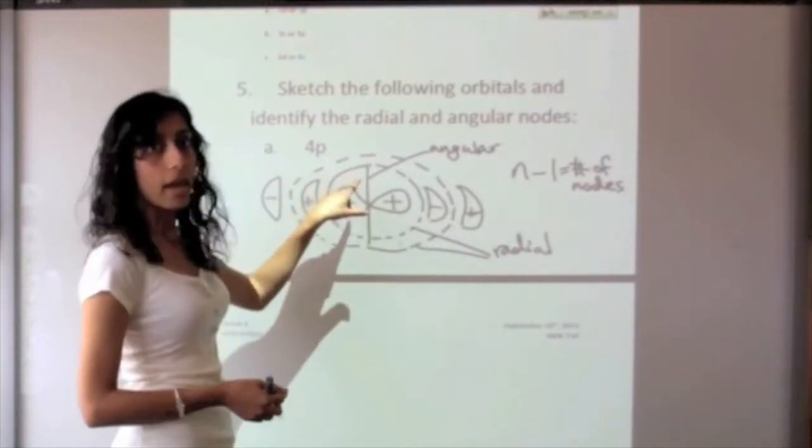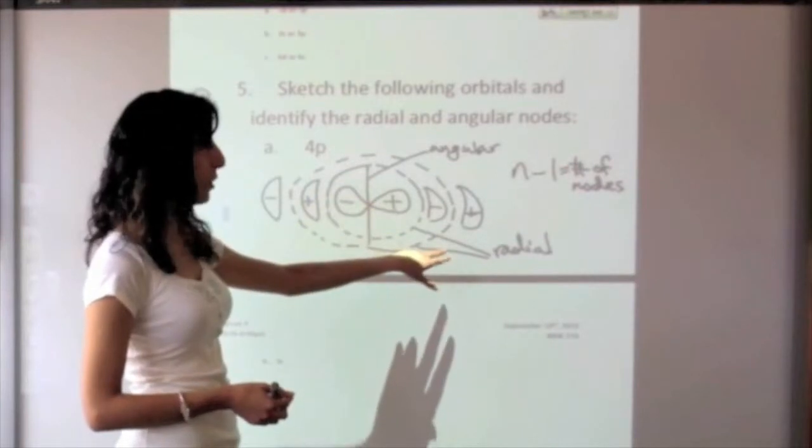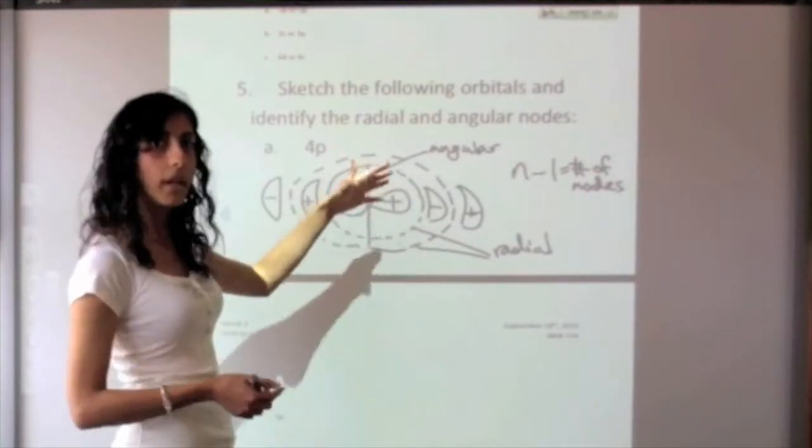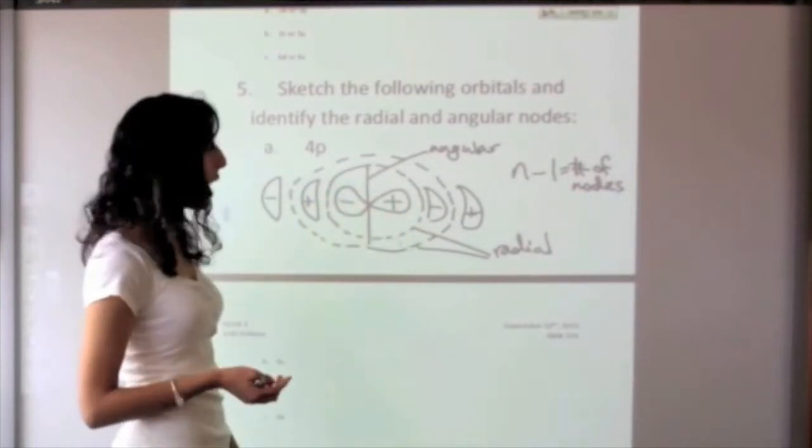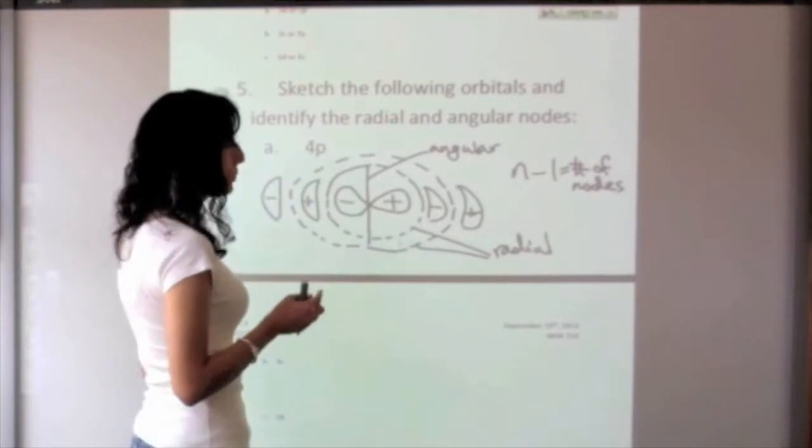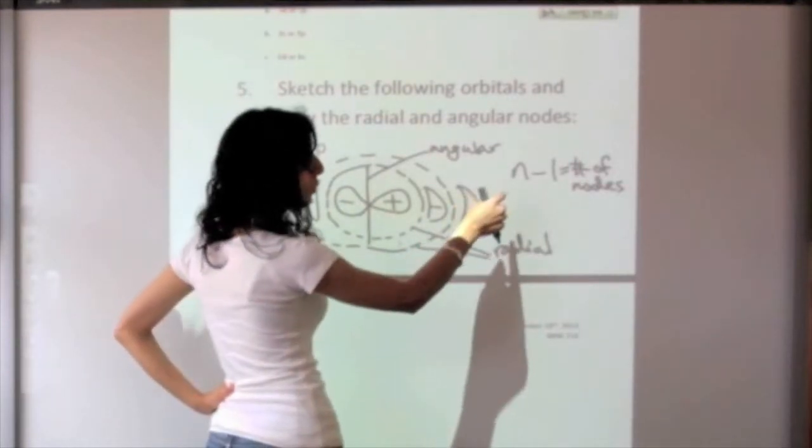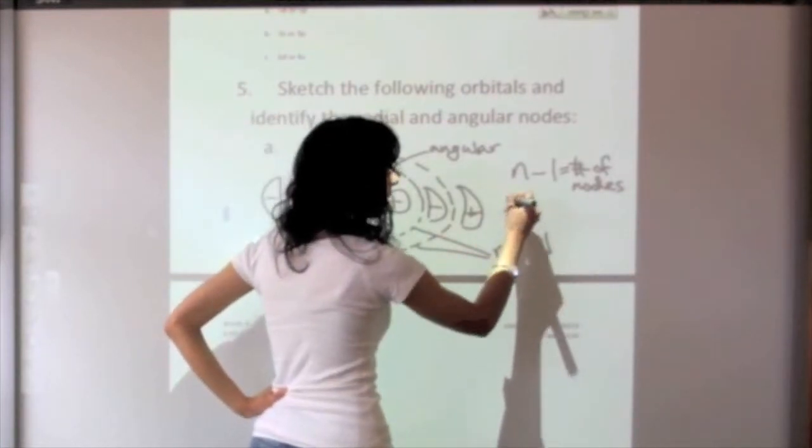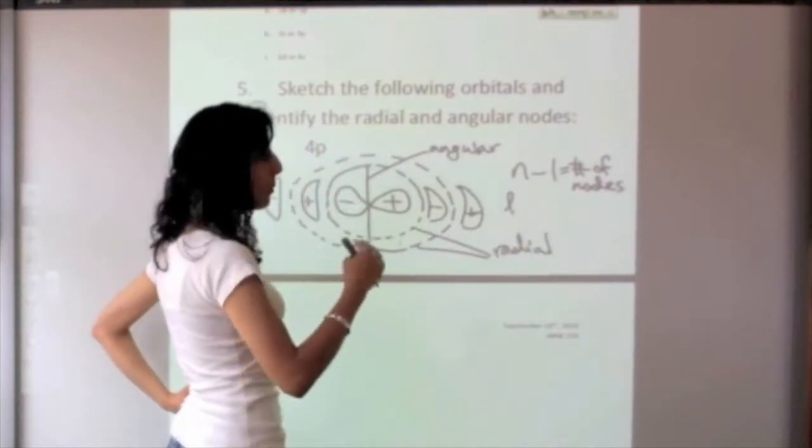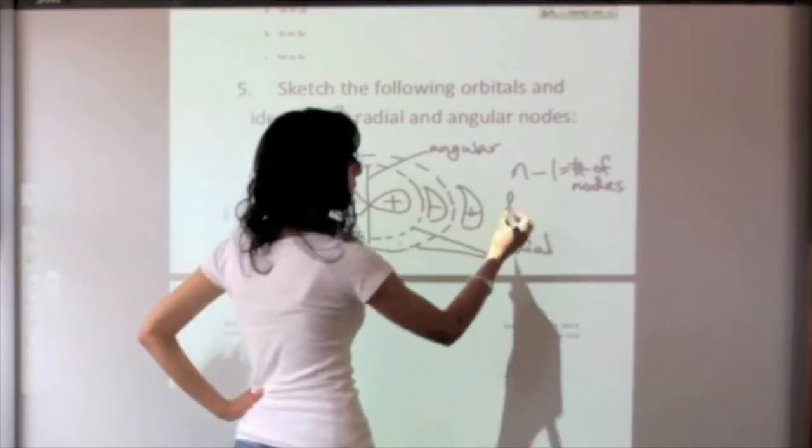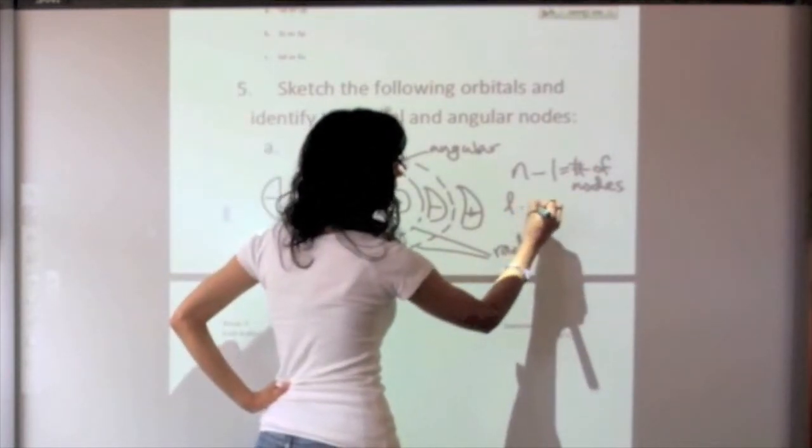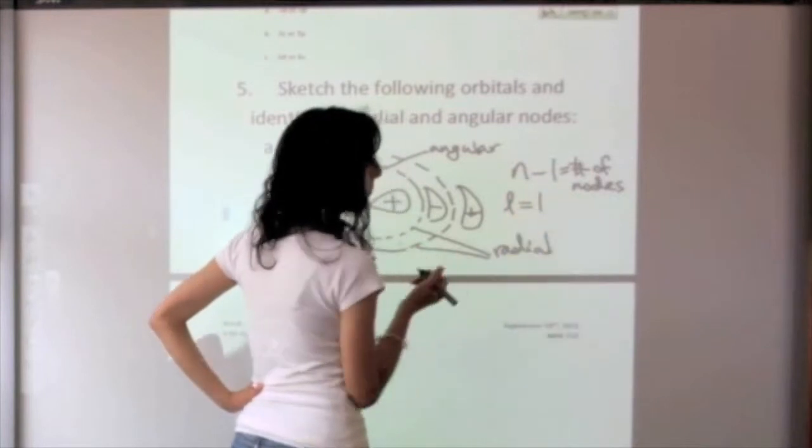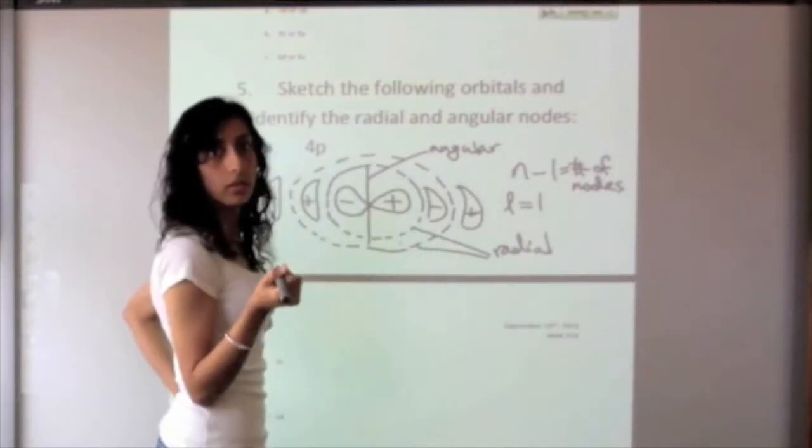Now one of them is an angular node and the other two are radial nodes. So how do we know how many angular and how many radial we're supposed to have? Well, this is a p orbital. If you remember from your quantum numbers, if n is 4, then our l can have any number up to n minus 1. For a p orbital, l is equal to 1. For an s orbital, l is 0. For a d orbital, l is 2.